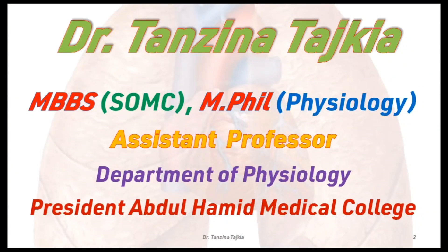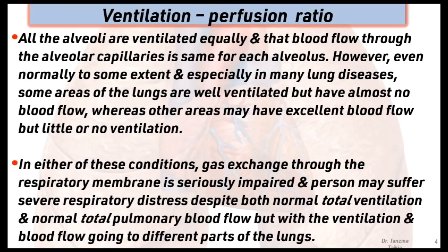Today's lecture is about ventilation-perfusion ratio in lungs. All the alveoli are ventilated equally and total blood flow through the alveolar capillary is the same for each alveolus. However, even normally to some extent, and especially in many lung diseases, some areas of lungs are well ventilated but have almost no blood flow, whereas other areas may have excellent blood flow but little or no ventilation. In either of these conditions, gas exchange through the respiratory membrane is seriously impaired, and the person may suffer severe respiratory distress despite both normal total ventilation and normal total pulmonary blood flow.